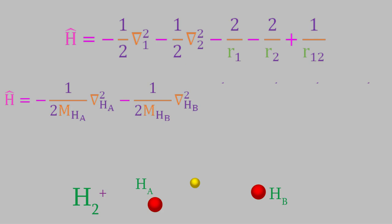Notice what we have here. These look just like the term we had for the electron kinetic energy in the helium Hamiltonian, except that we have the mass of each hydrogen nucleus in the denominator, where the subscript shows us which of the two hydrogens, A or B, the term is for. Actually, the term in the helium Hamiltonian also has the mass in the denominator, but you might remember that the mass of an electron is one in atomic units, so it dropped out.